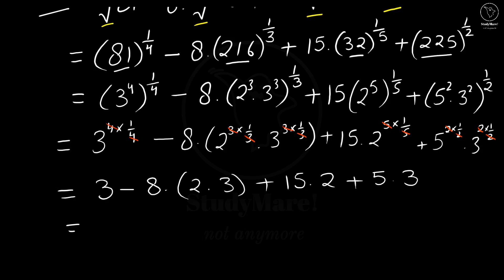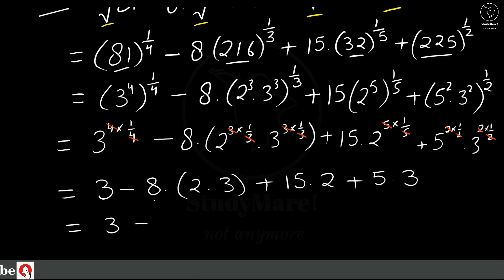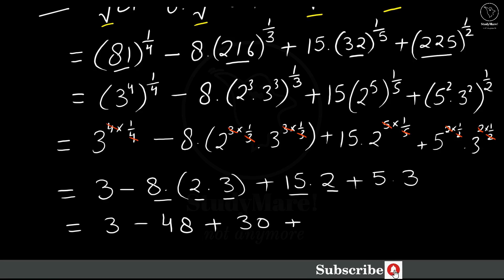Simplifying it further, it gets 3 minus 8 into 2, 16 into 3, 48. So here we have 48 plus 15 into 2, that is 30, plus 5 into 3, that is 15.